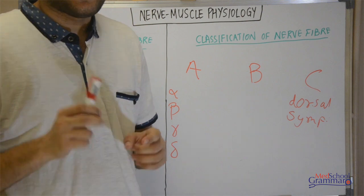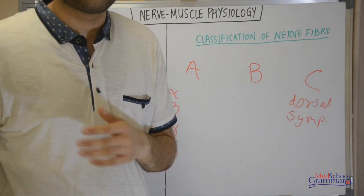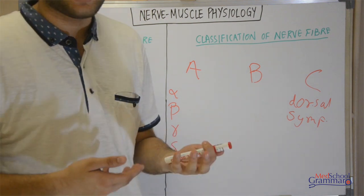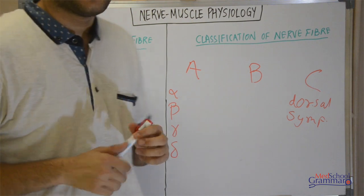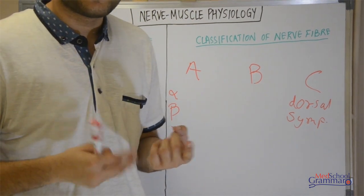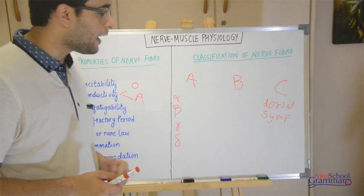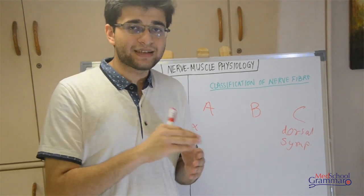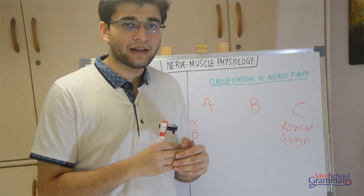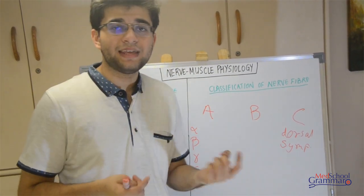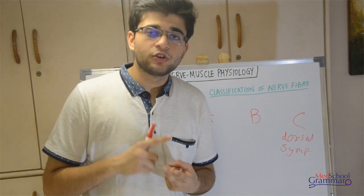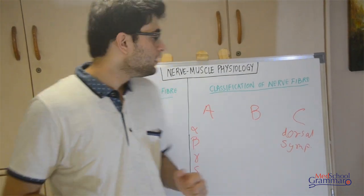A-alpha fibers are somatic motor and carry proprioception — the sense of position from joints. A-beta carries sensations like touch and pressure. A-gamma carries motor signals to muscle spindle intrafusal fibers, whereas A-alpha supplies the extrafusal fibers. A-delta carries pain, cold, and touch sensations.